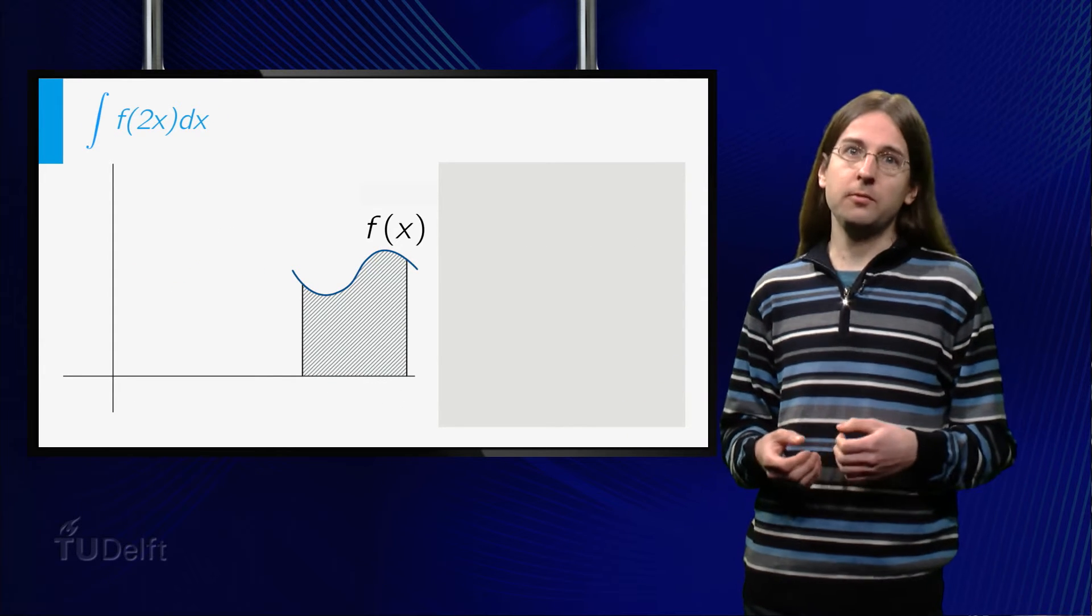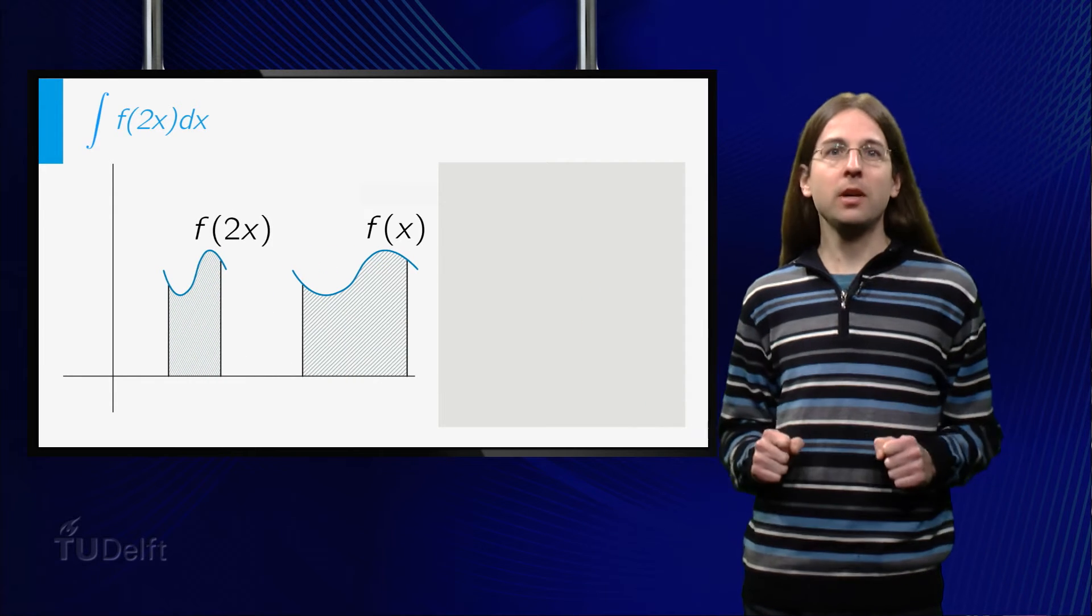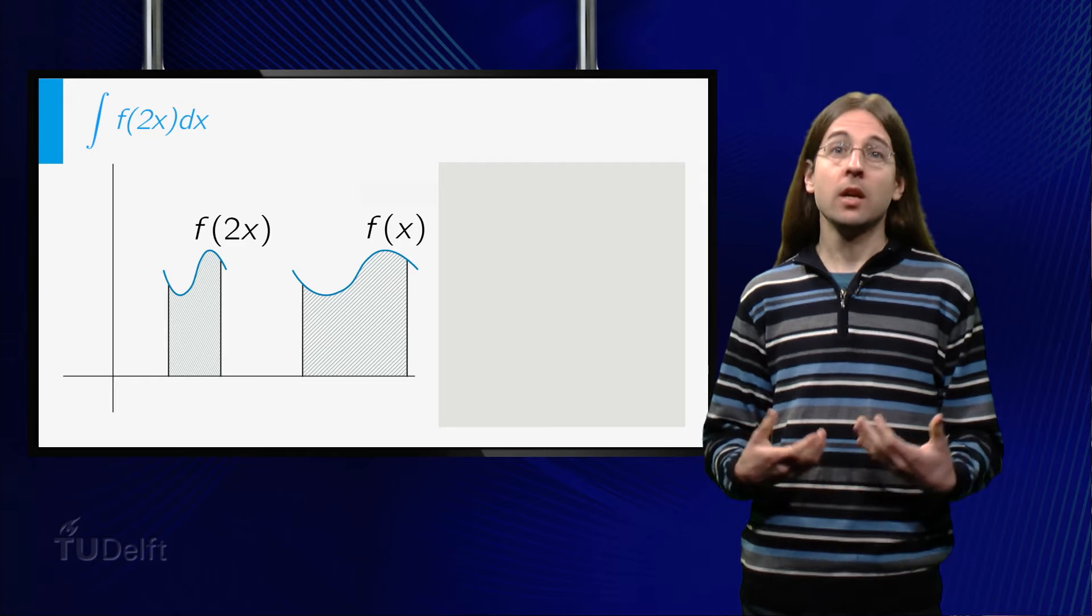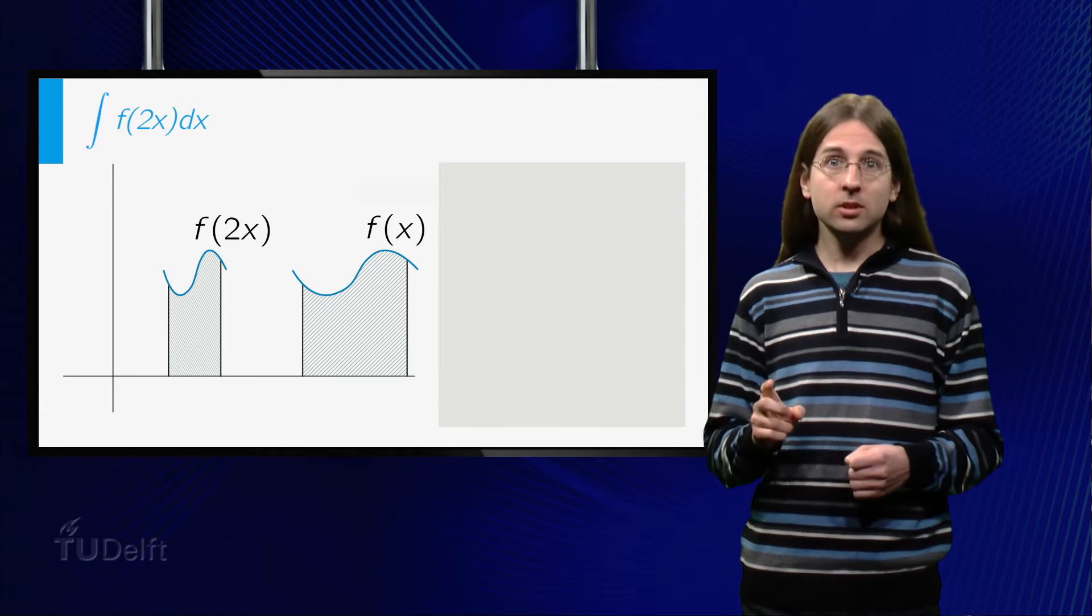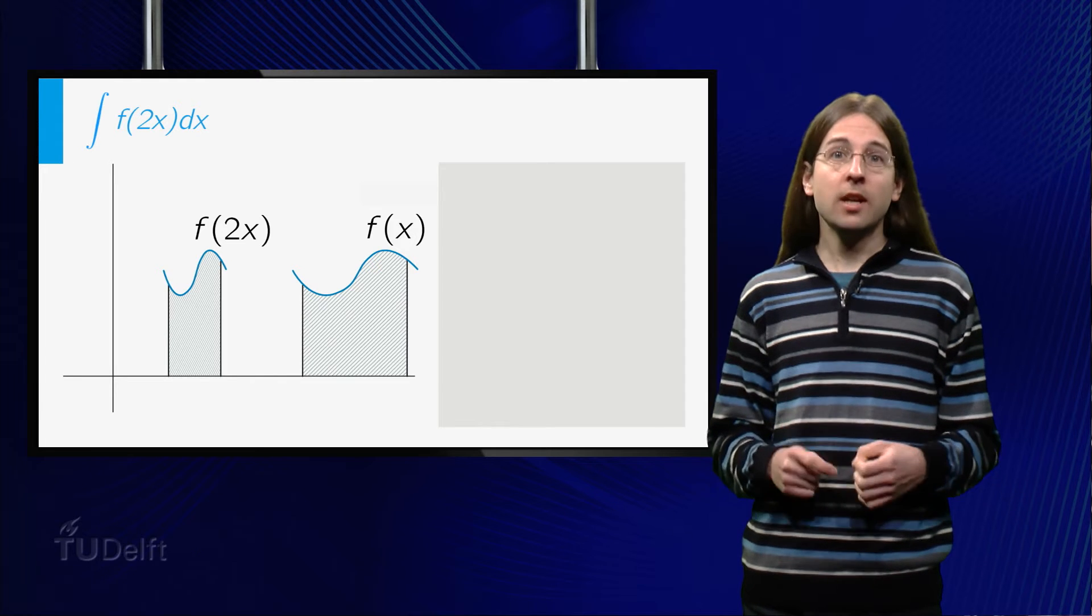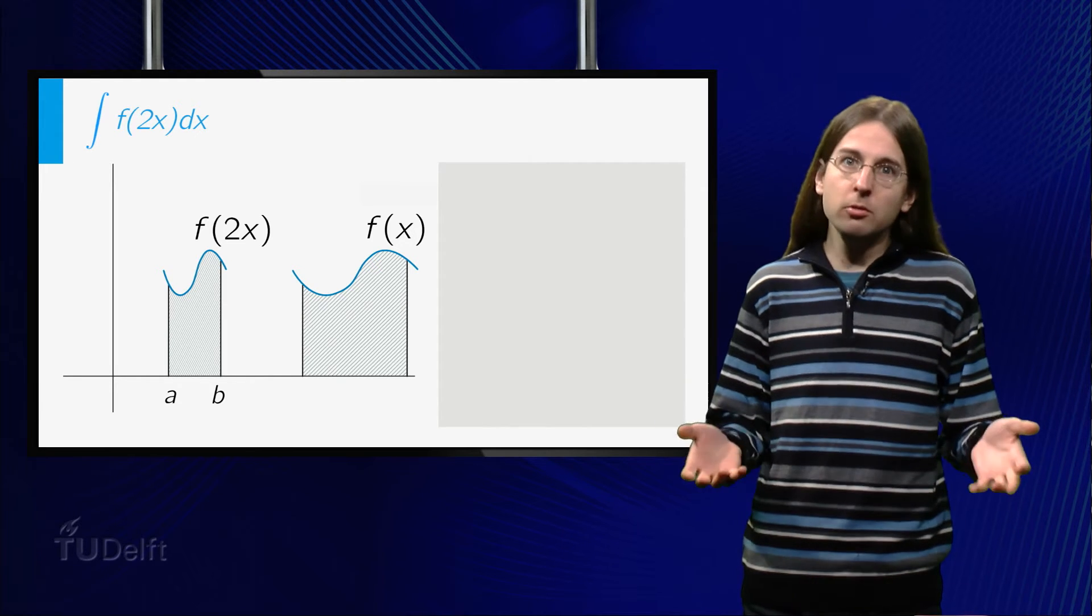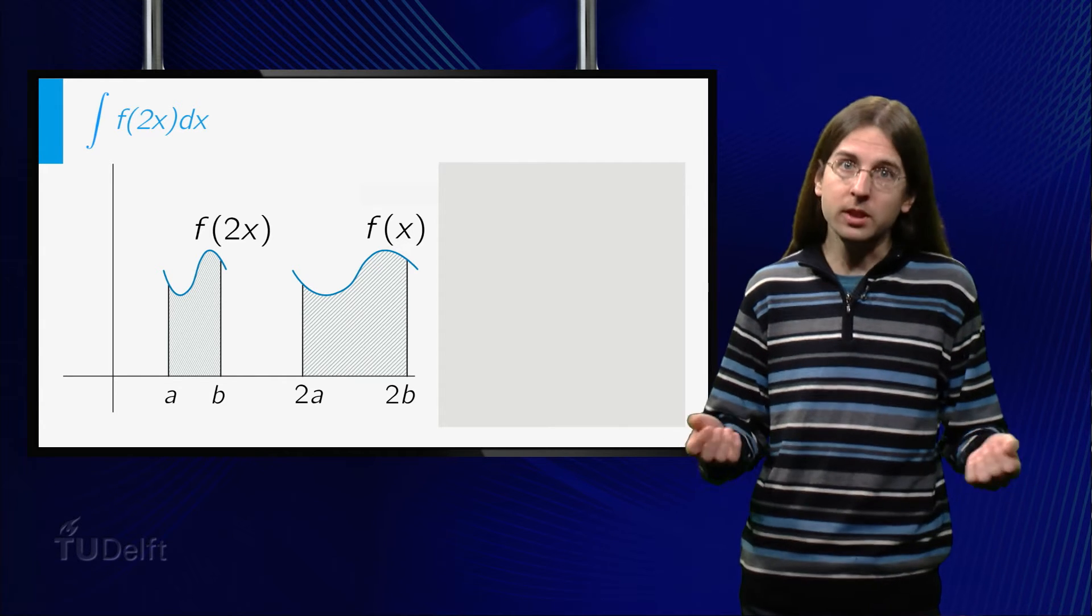If we consider the graph of f of 2x, we see that we compress the graph by a factor of a half towards the y axis. The area under the curve is thus also halved. Notice that the endpoints of the integral have been multiplied by one half as well. If we call the new endpoints a and b, the old ones were therefore 2a and 2b.